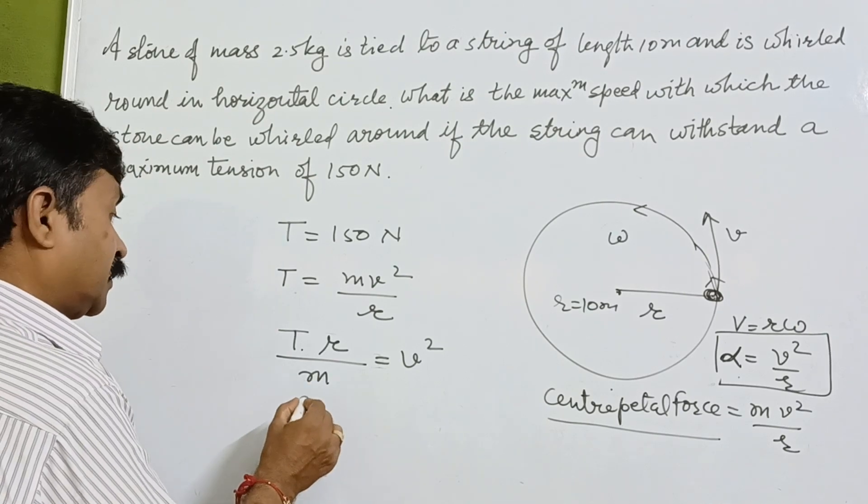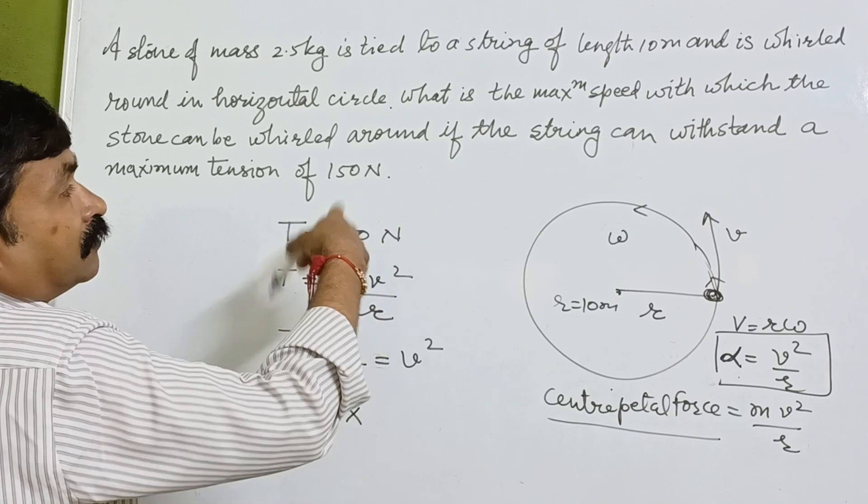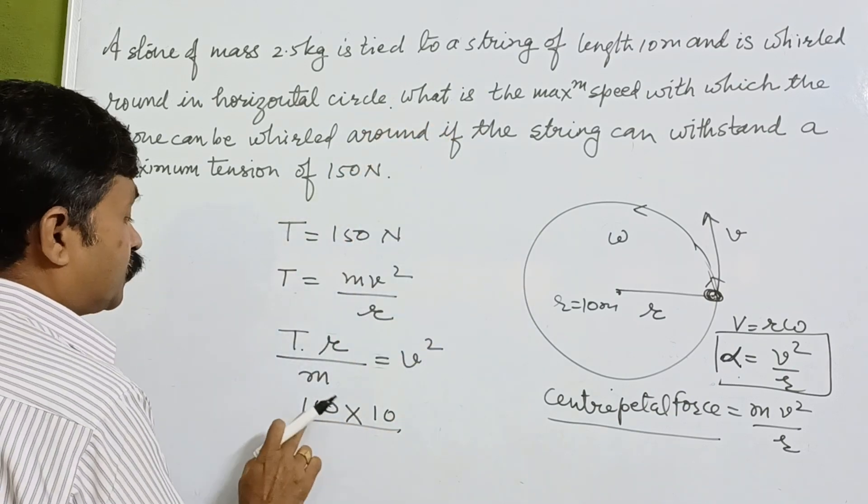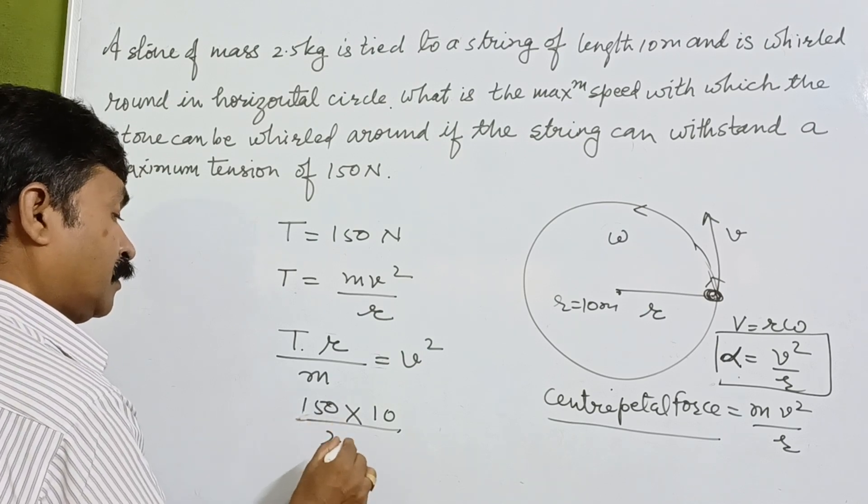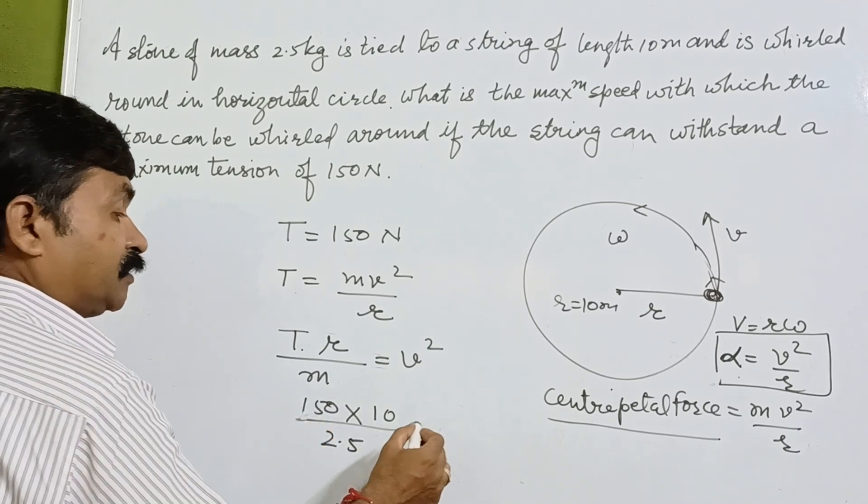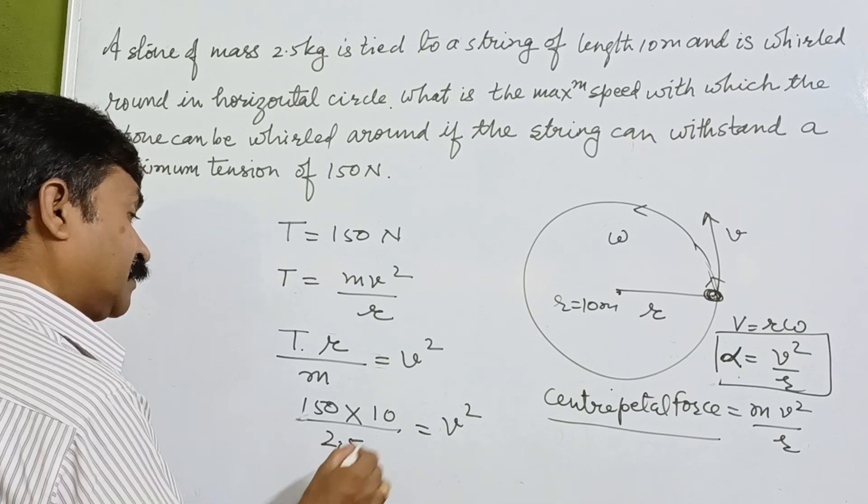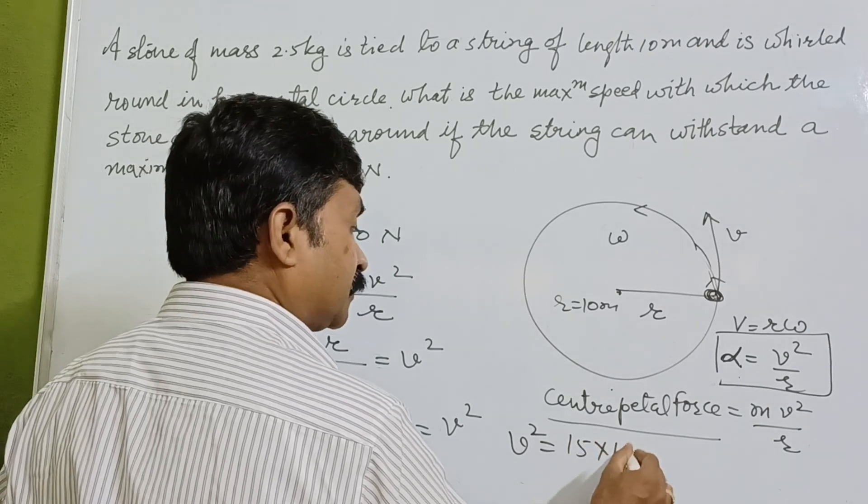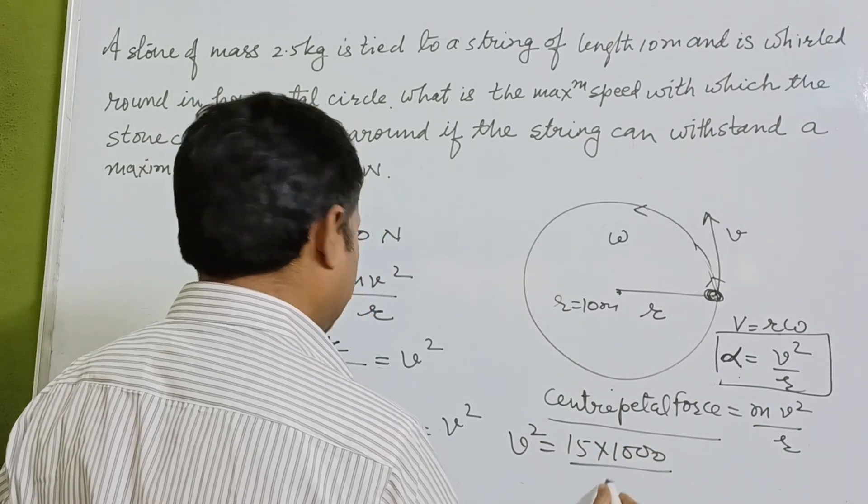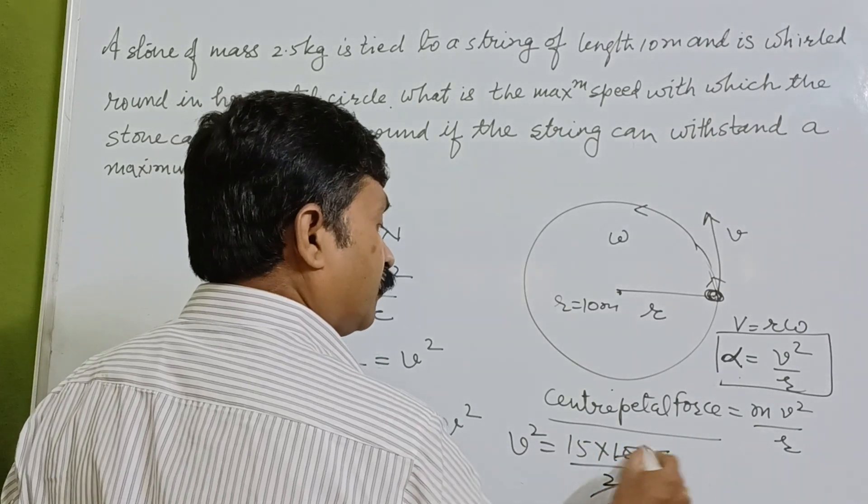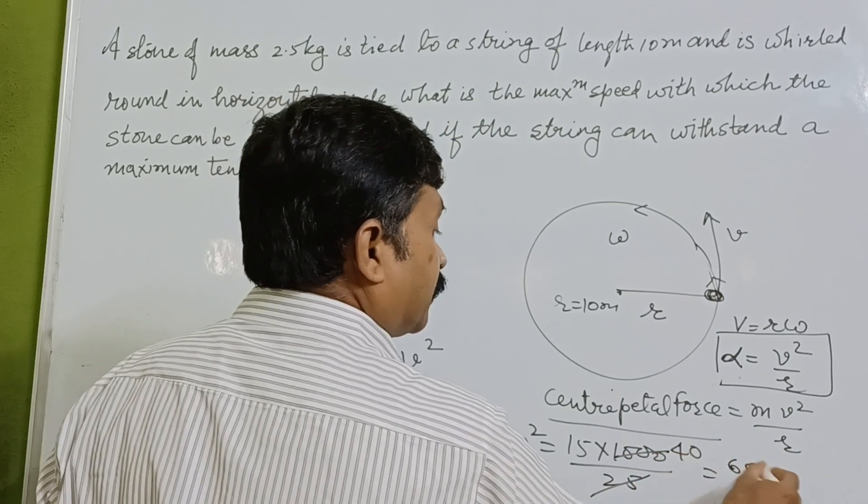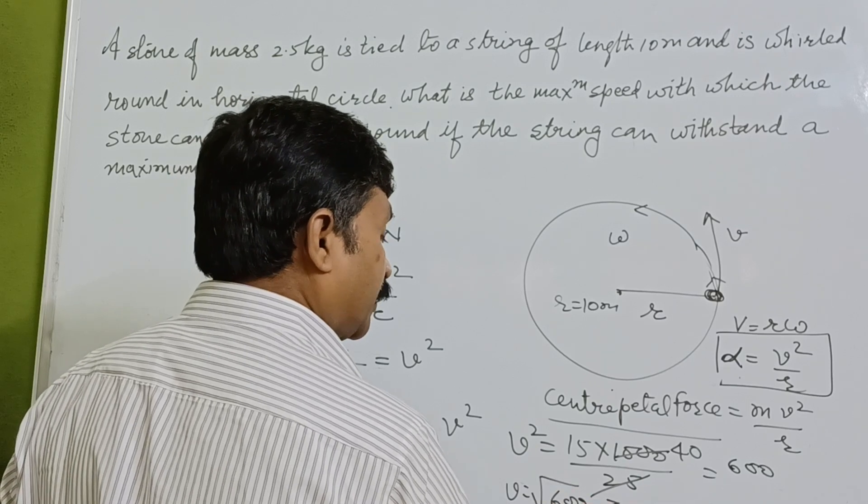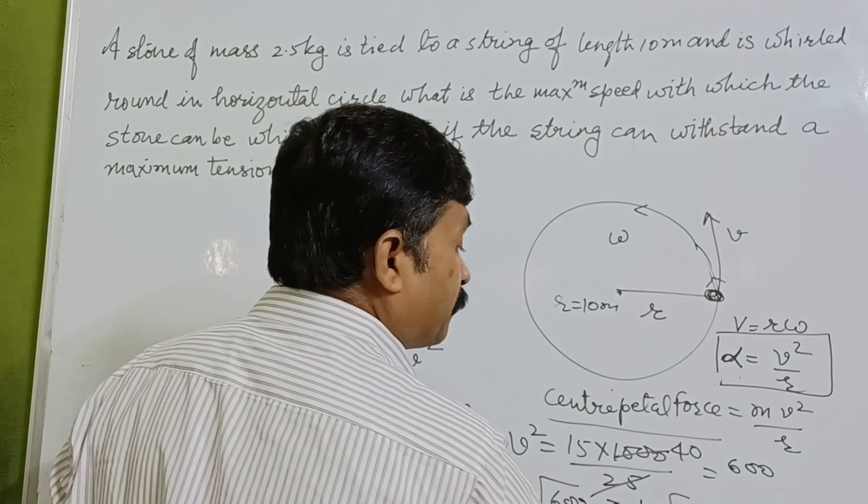Now, tension that is 150 N, our radius of this path which is given to us 10 meter, and the mass is given to us 2.5 kg. So V square, if we take this, V square will be equal to 15 into 1000 upon 25, it is 600. So V will be equal to root 600, so it is 10 root 6 meter per second.